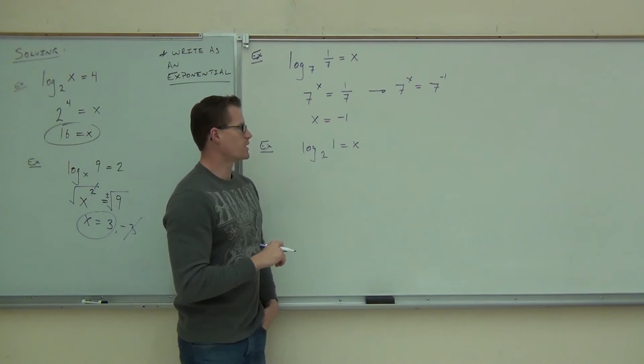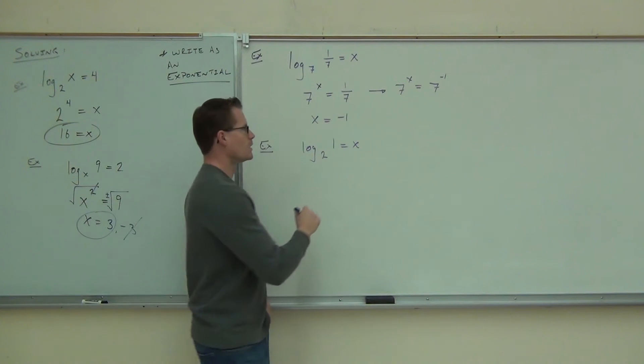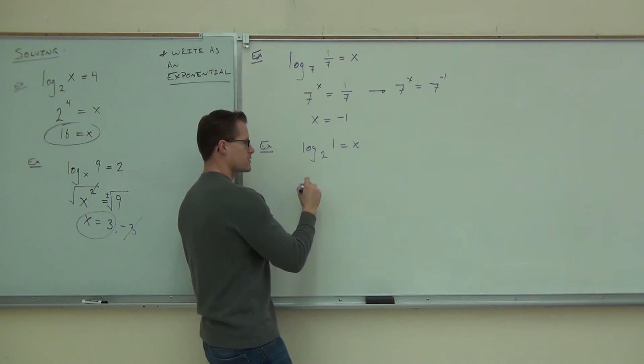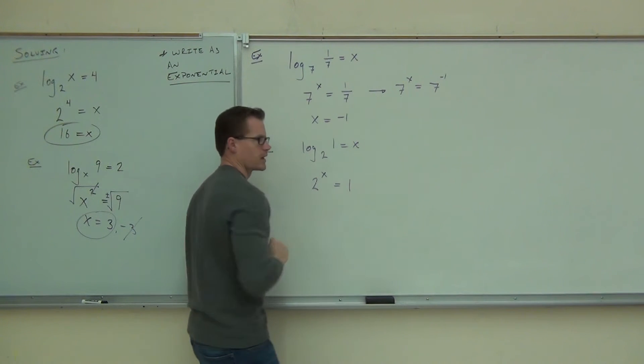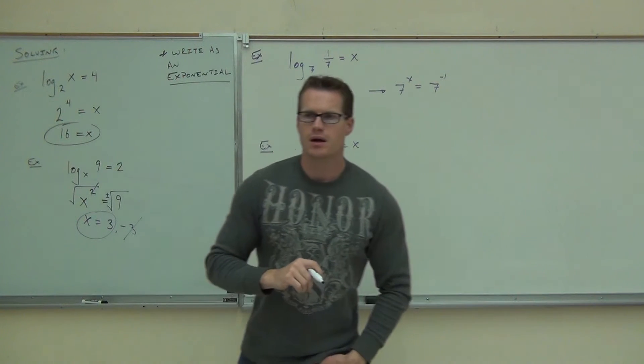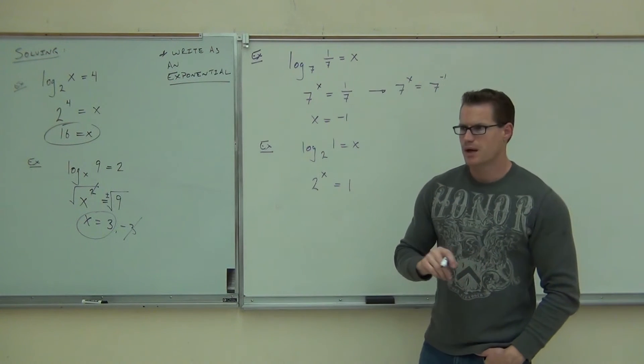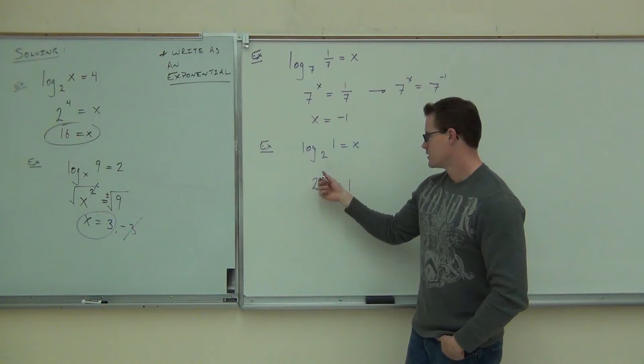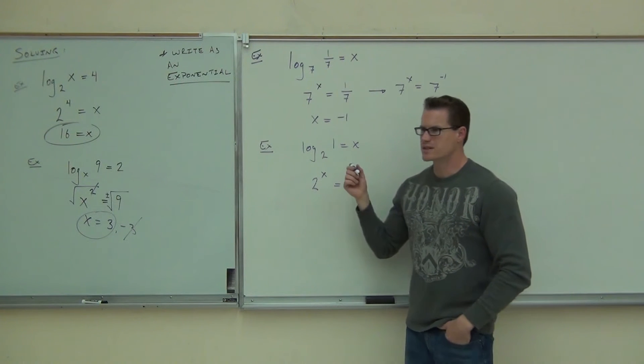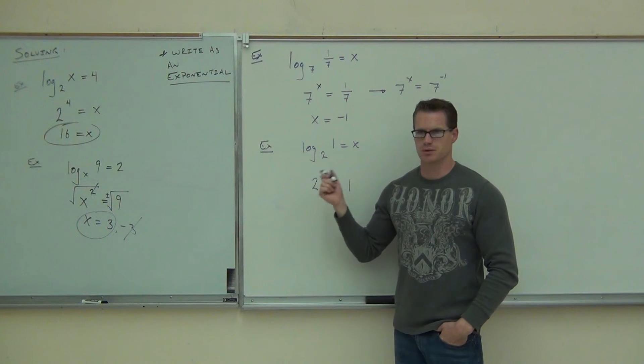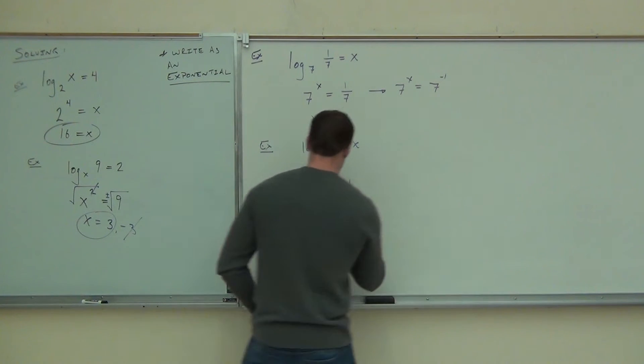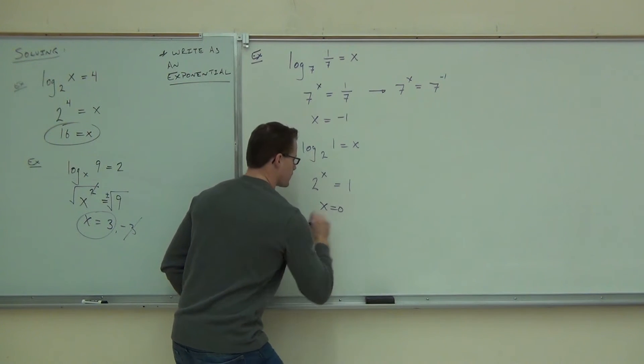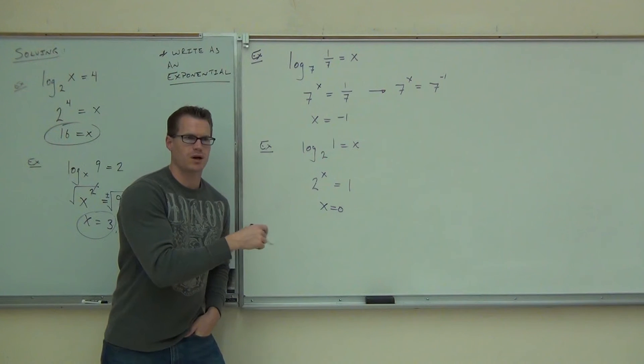Log base 2 of 1 equals x. This is going to show you something about logarithms here. If I write this as an exponential, what's your base? 2 to the x equals 1. Okay, now you tell me, what's the only way in the world I can get from 2 to the x and make it equal to 1? What does the x have to absolutely be? 0. Absolutely has to be 0. Now here's the question for you. Do you understand why it's got to be 0?